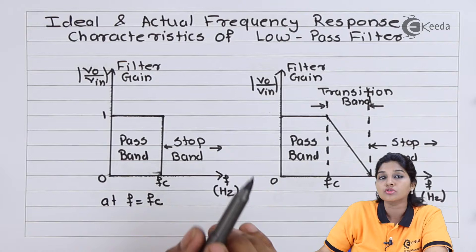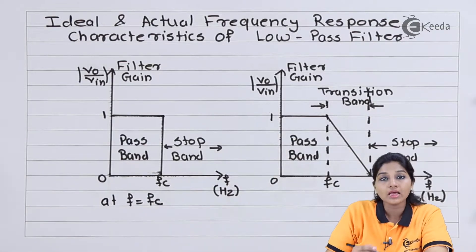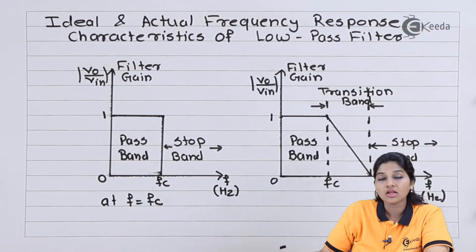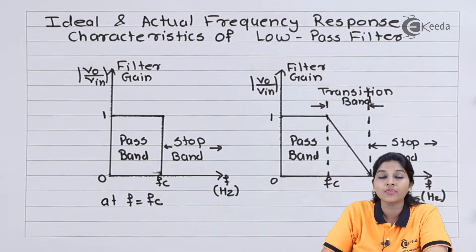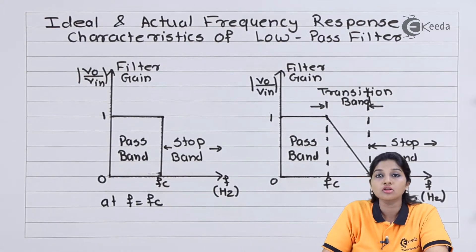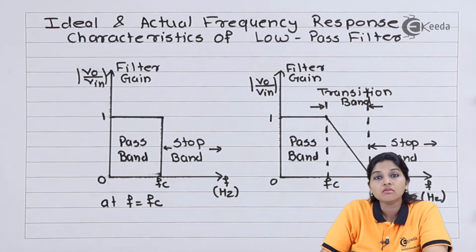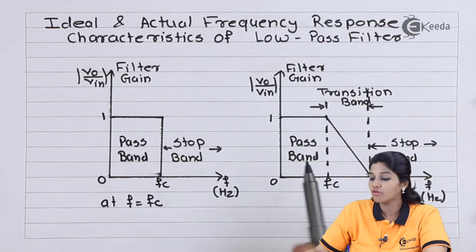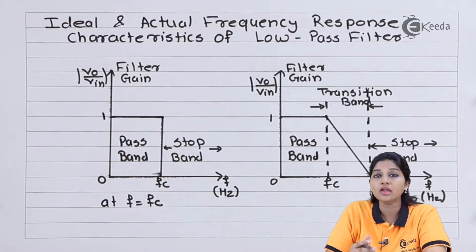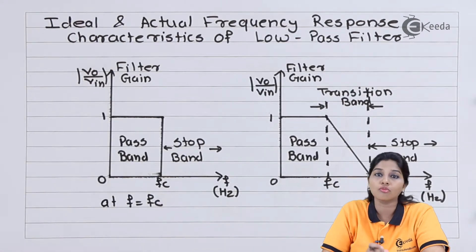The practical frequency response consists of a pass band from 0 to fc where gain equals 1. At f equals fc, the gain starts to reduce gradually but not suddenly. After the transition band, the gain becomes equal to 0, and that band is called the stop band. So the practical response of a low pass filter consists of: pass band which allows frequency to pass in the range 0 to fc, then a transition band in which gain reduces gradually to 0, and then the stop band which is the band of frequency attenuated or blocked by the filter.